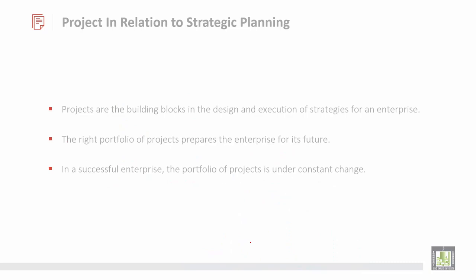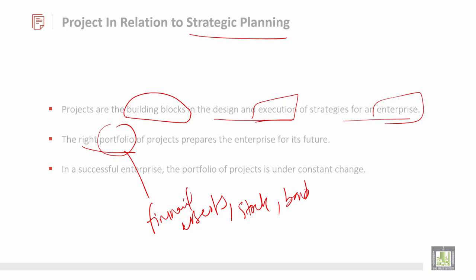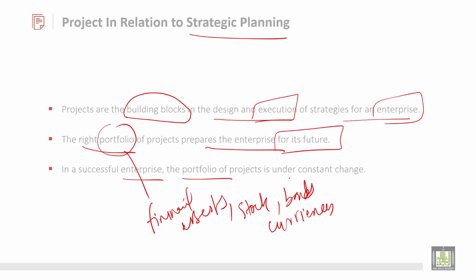Then project in relation to strategic planning. Strategic planning means these projects are actually a building block. They are thinking in a way like designing and execution strategies of an enterprise or company. Execution means working towards the right portfolio. Portfolio is the financial assets — like stocks, bonds, and currencies. These are the portfolio projects which prepare the enterprise for its future planning. In a successful enterprise, the portfolio of projects is under constant change, because every year you have a good turnover.